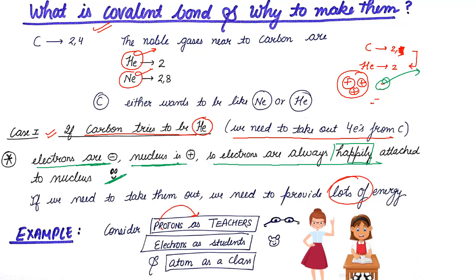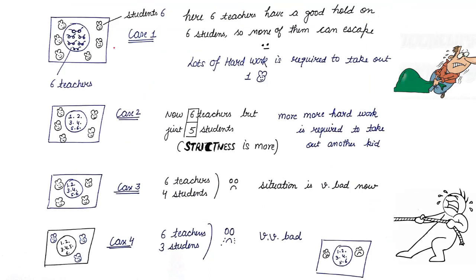Let's try to understand this with an example. Protons will be acting as teachers, electrons as students, and the atom as a class. There is a class which has 6 teachers and 6 students. All 6 teachers have a good hold on all 6 students. So if any one of the students is thinking to go out, don't you think it's going to be very, very tough? Because 6 teachers are taking care of 6 students very, very nicely.